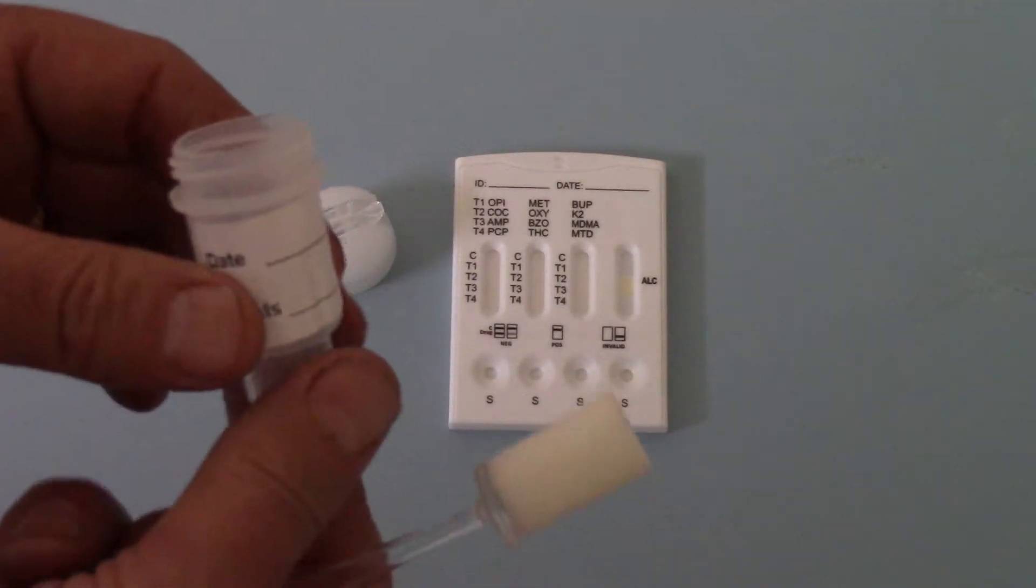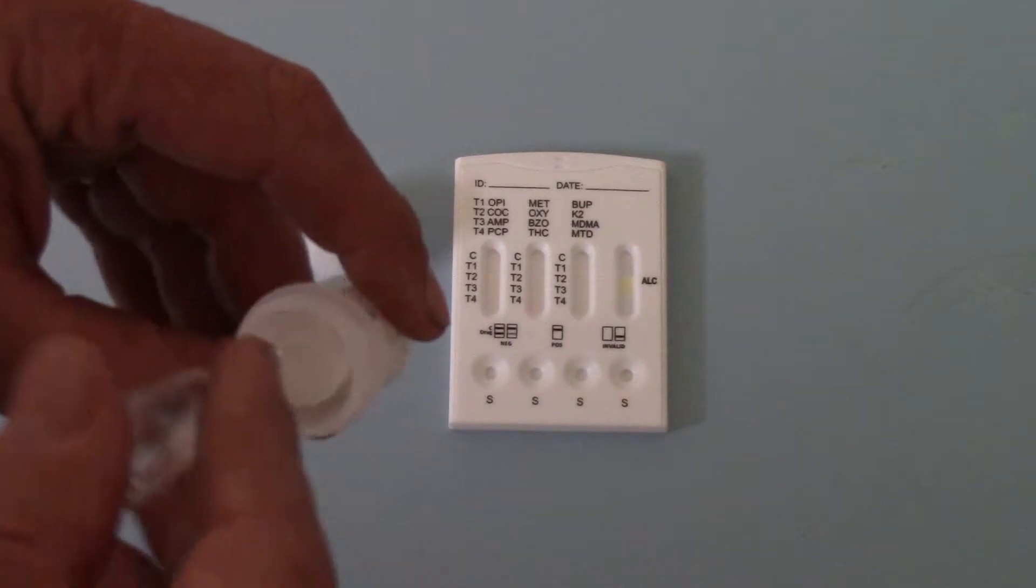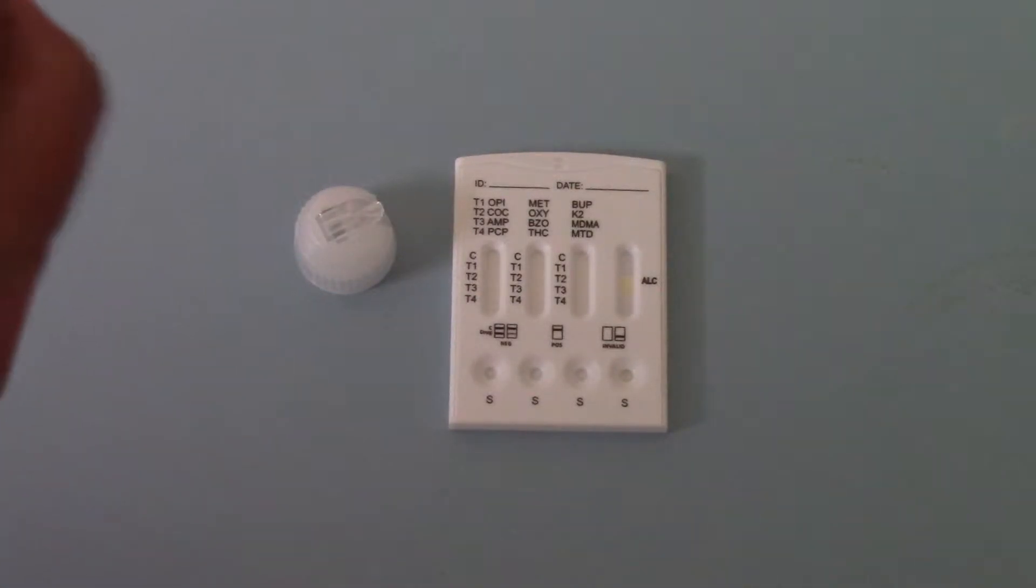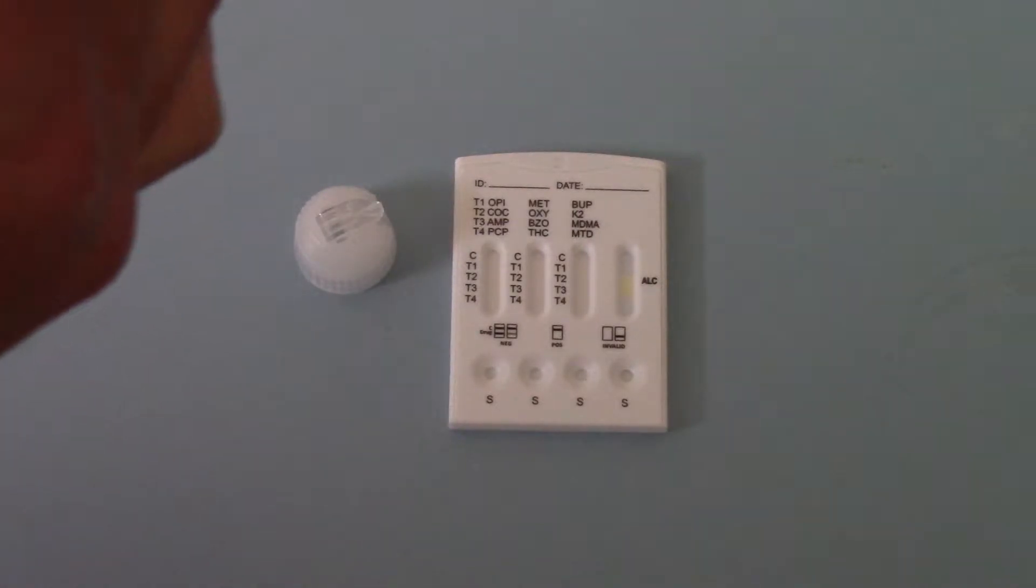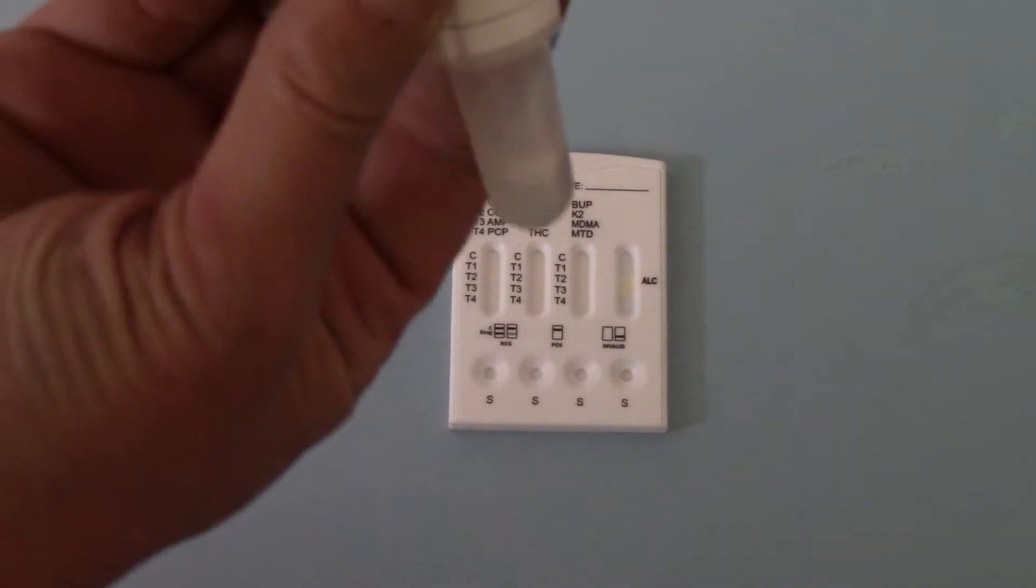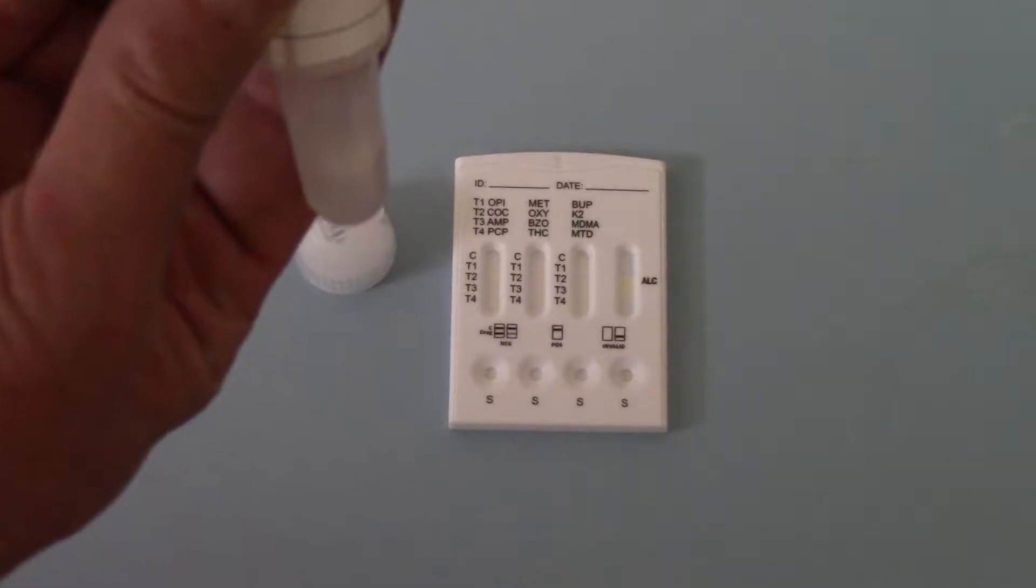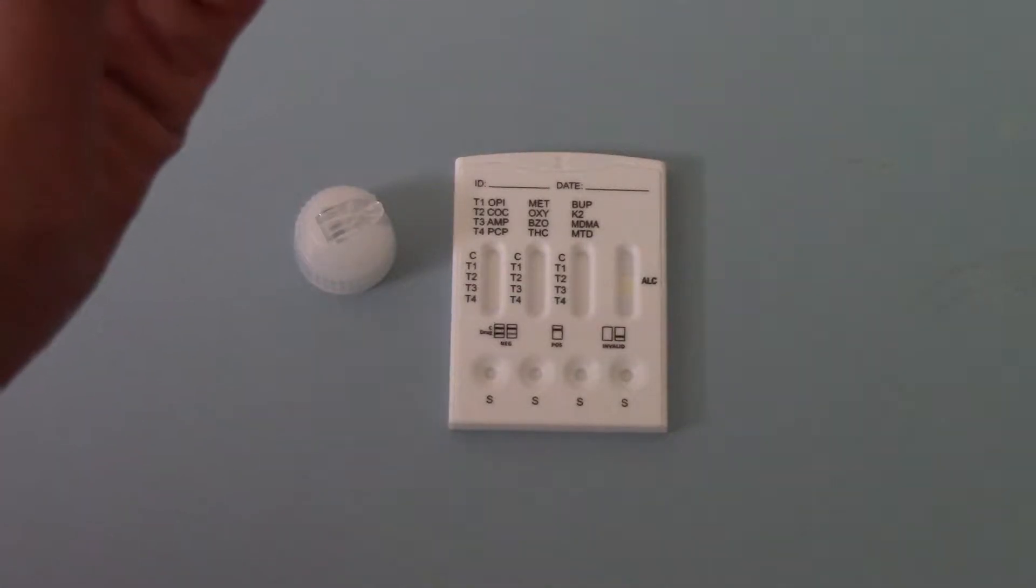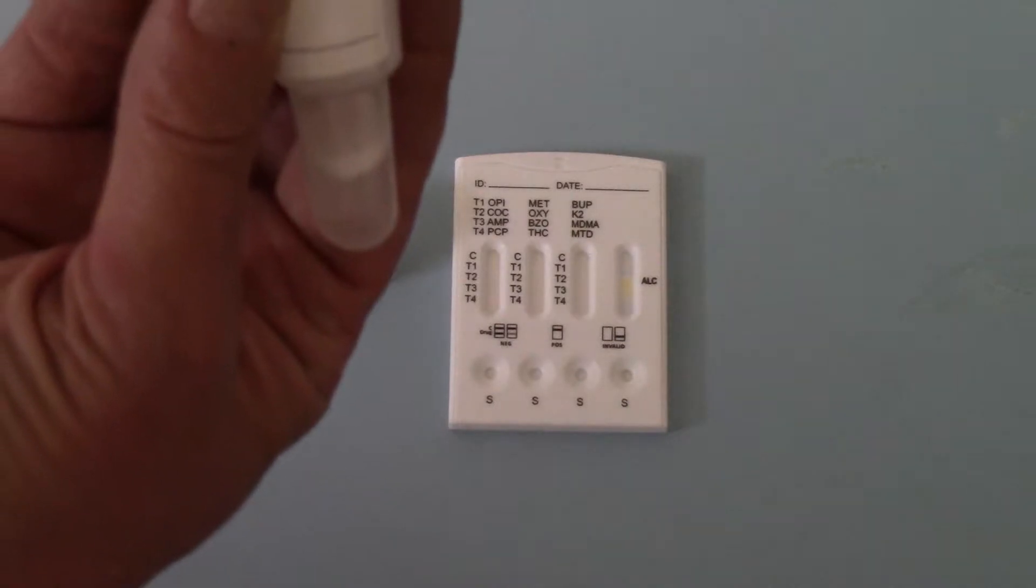Now if you unscrew the lid of the collector, you just push this down into the base and you'll see in the base we've got approximately five mils of saliva. When it's completely filled, that's a very good sample we've got there.